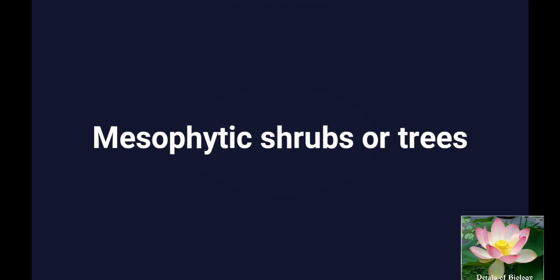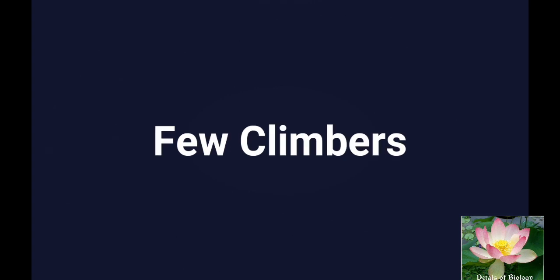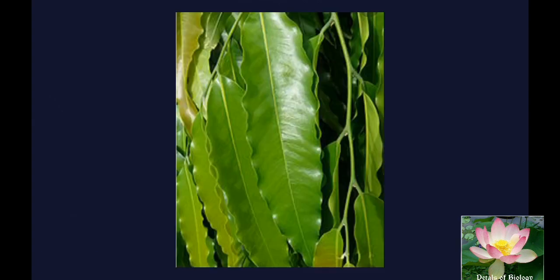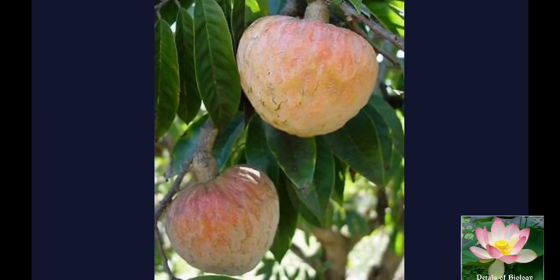Mostly the plants are mesophytic and they are shrubs and trees. Climbers are also present in this family. The leaves are alternate and simple. Wavy margin is present in the case of Polyalthea leaves. The leaves are gland-dotted in Anona.